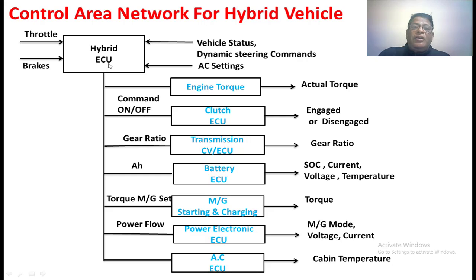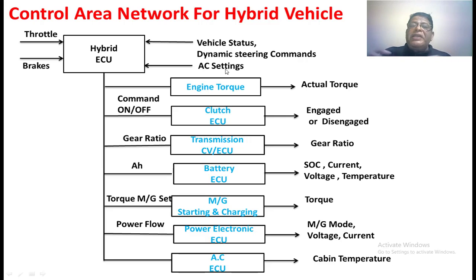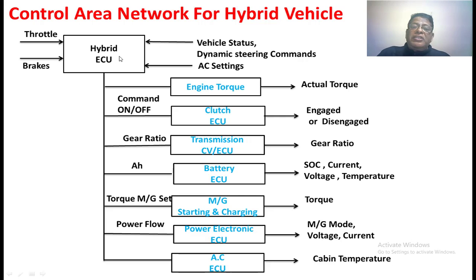The ECU — Electronic Control Unit — has multiple inputs: throttle, brakes, vehicle status, dynamic streaming commands, and AC settings. It takes information from different parts of the vehicle, and based on that information it gives commands to subsystems such as the engine, torque, clutch, transmission system, battery, motor, and generator. Based on these inputs, the control circuit activates the particular subsystem so that the actual work is done in the vehicle depending upon the driver's command.